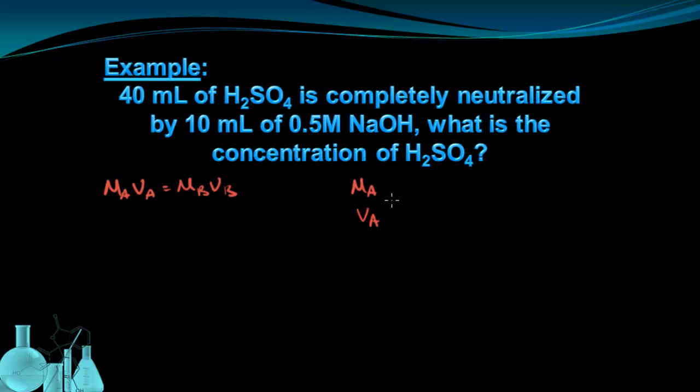So Ma and Va, let's identify the acid first. Well, the acid is H2SO4, sulfuric acid, so we don't know the molarity. We do know that the volume of the acid is 40 milliliters. So now we should find Mb and Vb. Well, the base is sodium hydroxide, and its molarity is 0.5. And the volume of the base is 10 milliliters because that's how much was used.